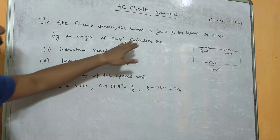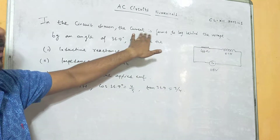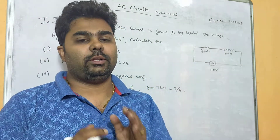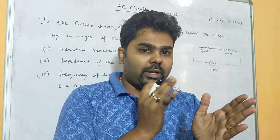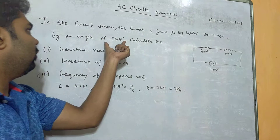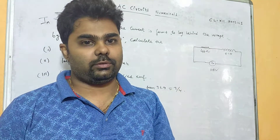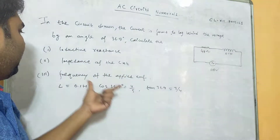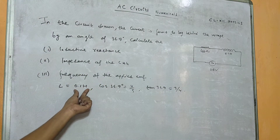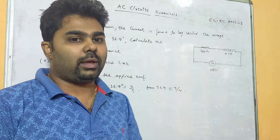Next question: in the circuit drawn, the current is found to lag behind the voltage by an angle of 36.9 degrees. Since current is lagging, voltage is leading — it is an RL circuit. In an RL circuit, current lags and voltage leads by up to pi by 2, as seen in phasor diagrams. The phase difference here is 36.9 degrees. We have to calculate inductive reactance XL, impedance of the circuit, and the frequency of the applied EMF. Given: inductance L equals 0.1 henry, cos 36.9 equals 4 by 5, tan 36.9 equals 3 by 4.